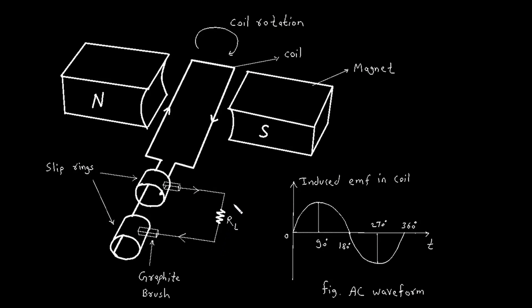The output voltage of an AC generator is not constant, it varies with time. This variation forms a wave-like pattern known as a sine wave or sinusoidal wave. Let's look at the waveform in our diagram, labeled induced EMF in coil. This sine wave represents how the induced EMF varies as the coil rotates.